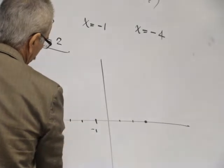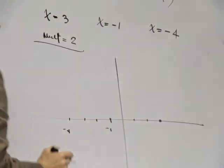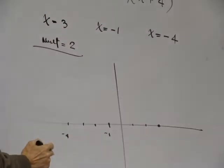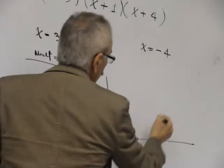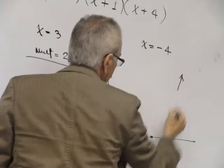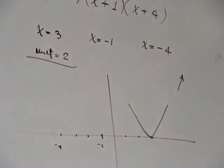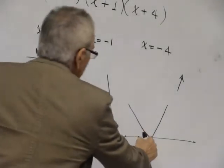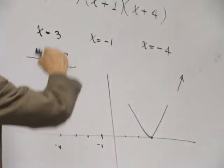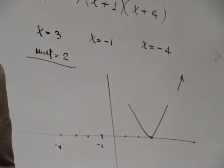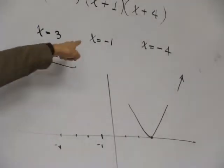2, 3, 4, -4. You know that multiplicity 2, because it opens up, the only possible way is this. You never cross the x-axis if the multiplicity is an even number, 2 times.